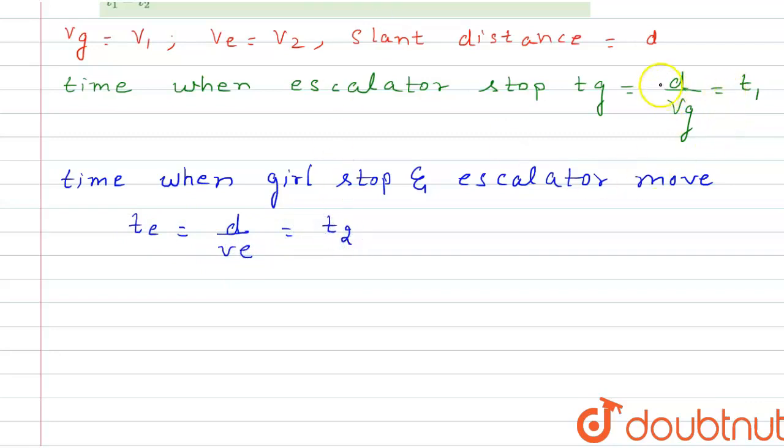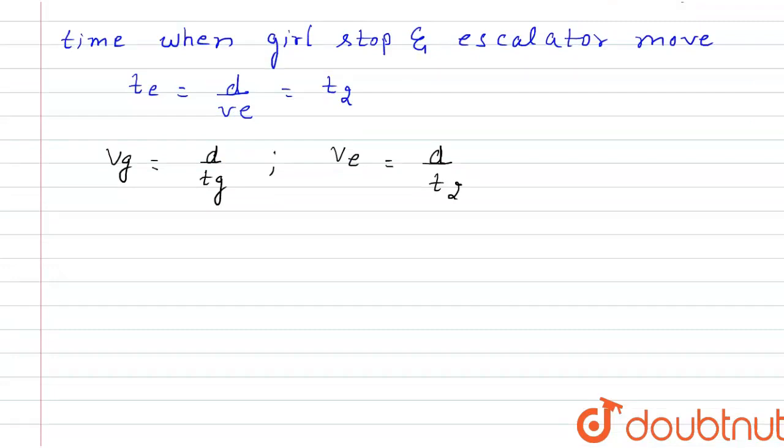And from this time we can find the value of vg. vg equals distance by time, that is tg. And from here we can also calculate the value of ve, which equals distance by time t2.